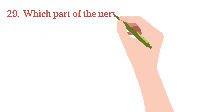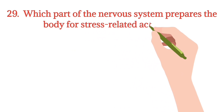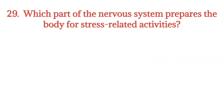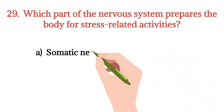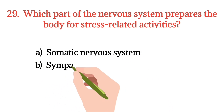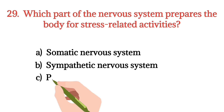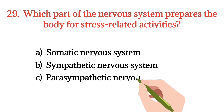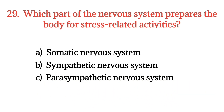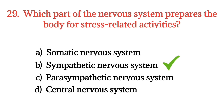MCQ number 29. Which part of the nervous system prepares the body for stress-related activities? Option A: Somatic nervous system. Option B: Sympathetic nervous system. Option C: Parasympathetic nervous system. Option D: Central nervous system. The right option is Option B.